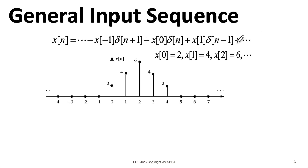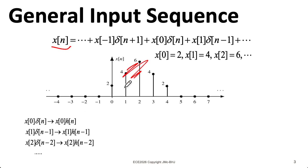Suppose we put this sequence x of n into a linear time invariant system with impulse response h of n. How might we think about the output? Well, suppose for a second we didn't have any of these stems here. We just had this stem at n equals 0 with a height of 2. Well, we know that if we put the unit impulse delta n into the system, we get the impulse response h of n out.